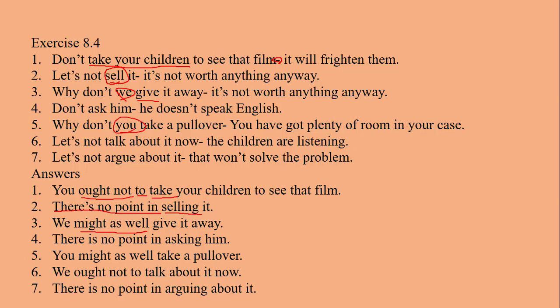The sixth question is: 'Let's not talk about it now — the children are listening.' If the matter is confidential, it is not good to discuss it while the children are listening, so it should not be done. There is no subject directly visible in the question, but since it uses 'let's,' the subject becomes 'we.' The answer is: We ought not to talk about it now.